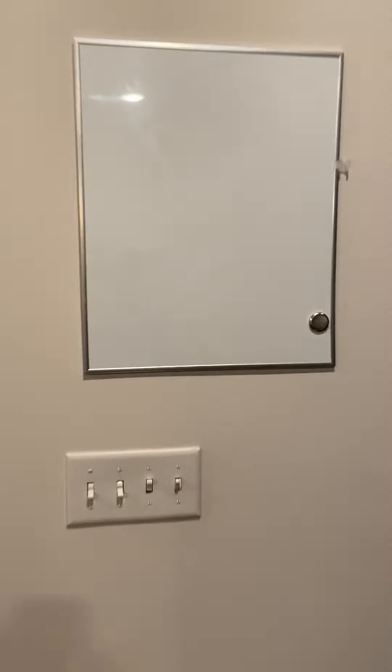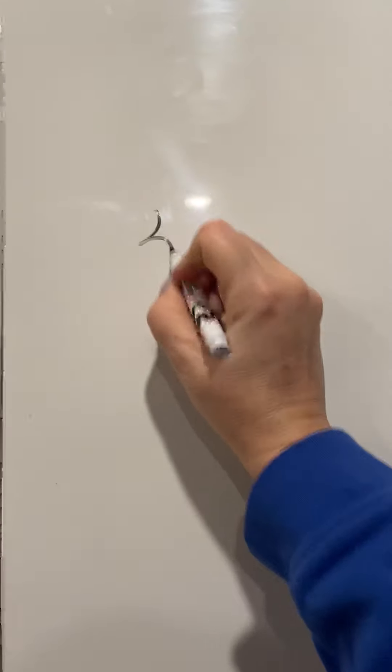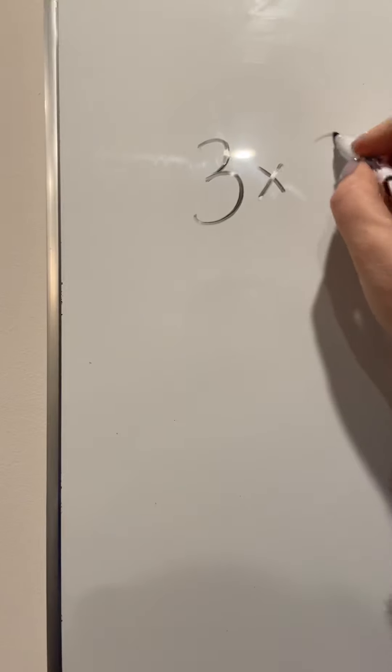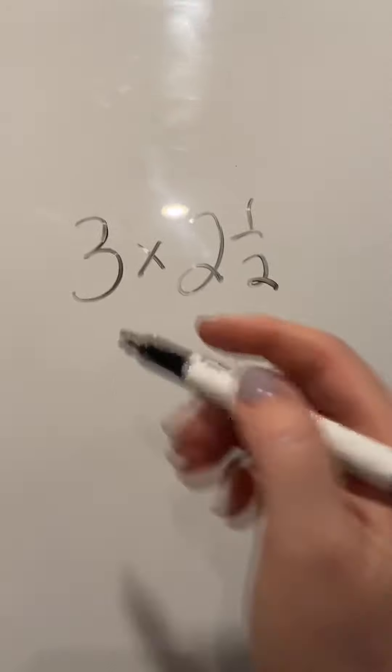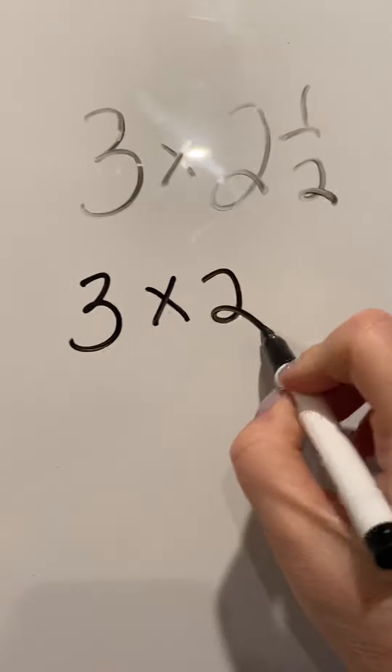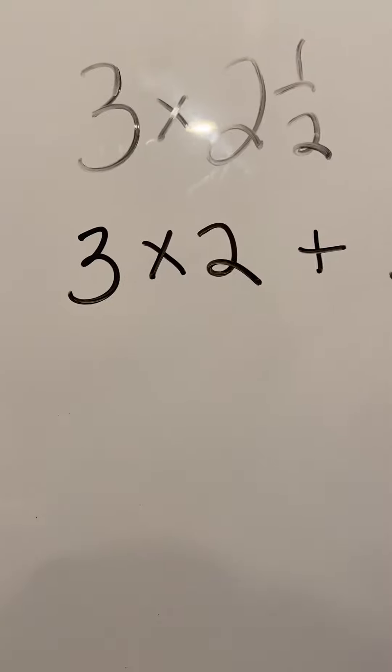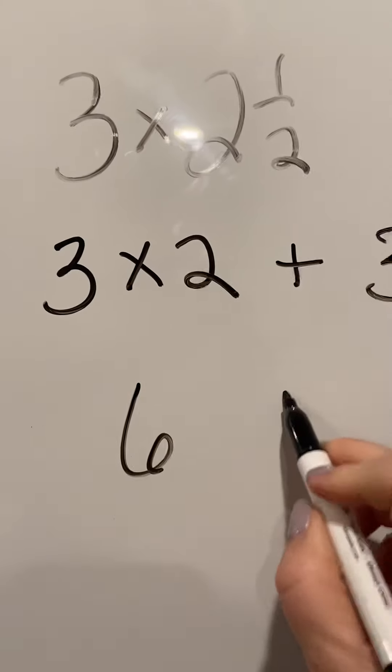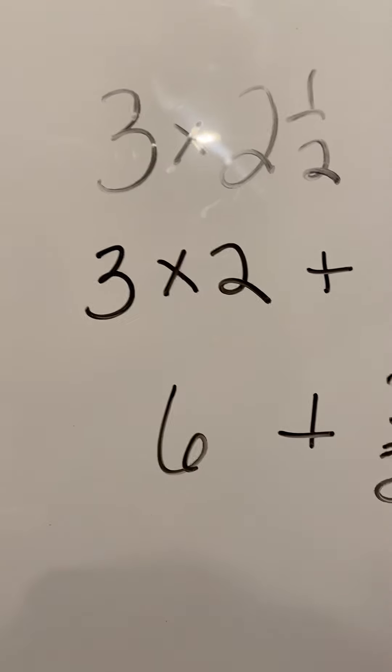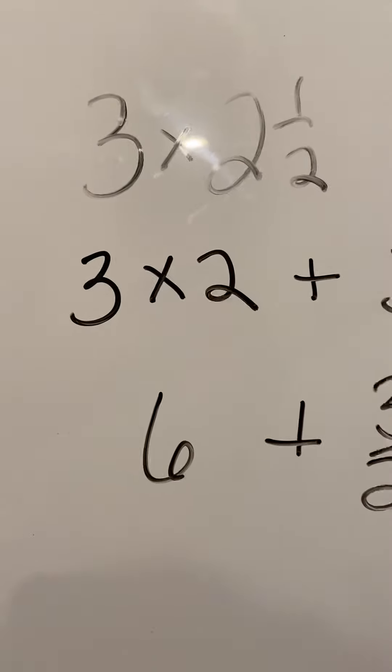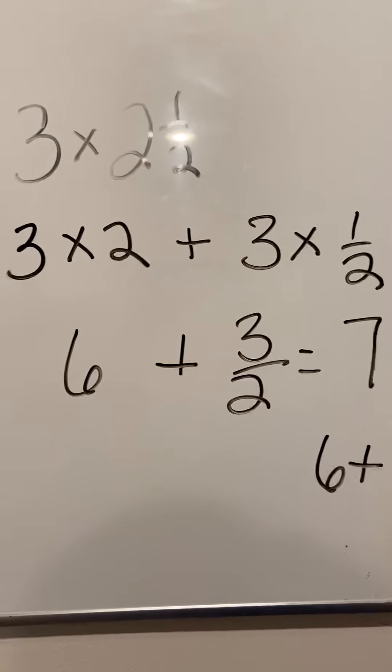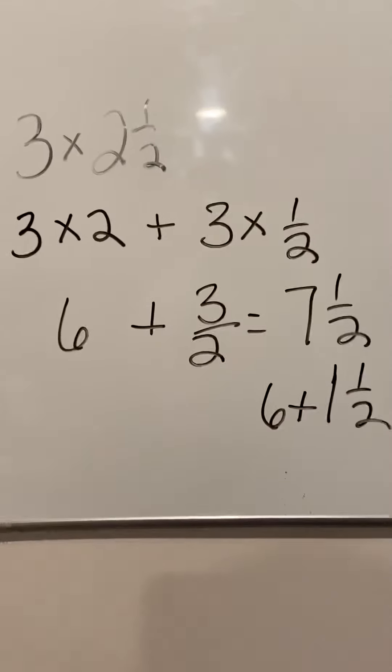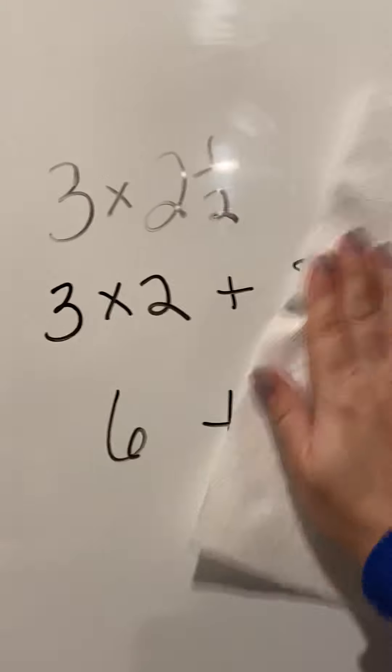First thing I want to do is review a lesson on what we've been doing. If I take three times two and a half, I have to take three times two plus three times one half, which is six plus three halves, which equals seven and a half, because you have six plus one and one half. I think you guys all know how to do that. Just to remind you that's how you do it.